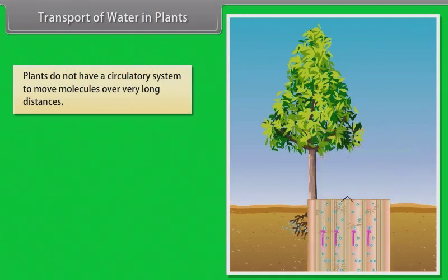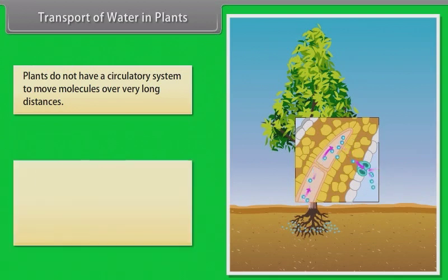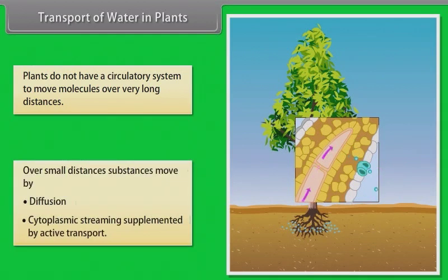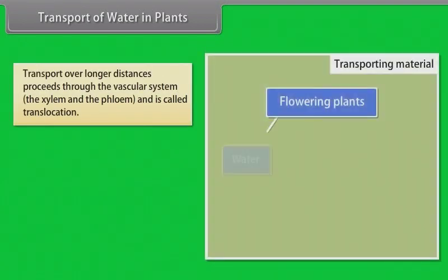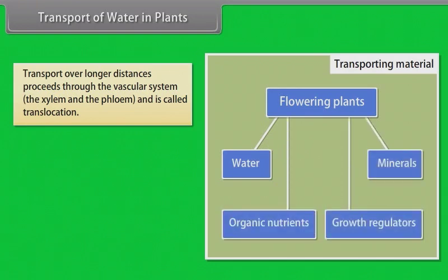In a flowering plant, the substances that would need to be transported are water, mineral nutrients, organic nutrients and plant growth regulators. Over small distances, substances move by diffusion and by cytoplasmic streaming, supplemented by active transport. Transport over longer distances proceeds through the vascular system and is called translocation.